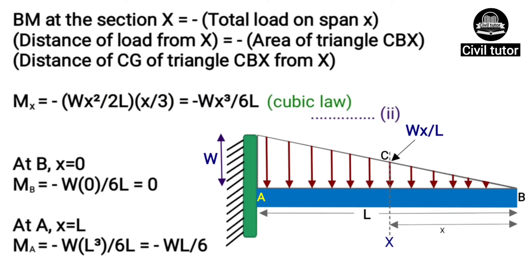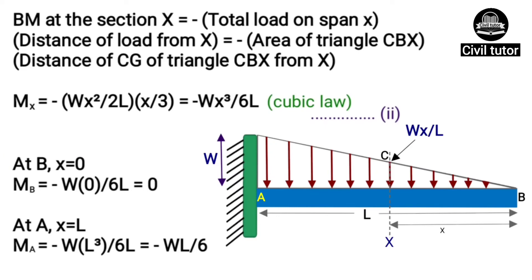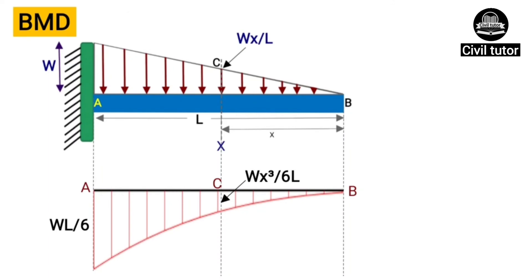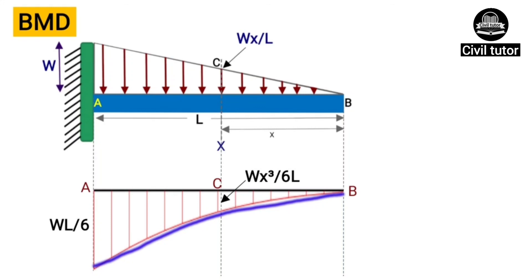At point B, x = 0, so substituting into equation two gives bending moment at B equal to 0. At point A, x = L, substituting into equation two gives bending moment at A equal to −WL²/6. To draw the BMD, we start from baseline AB, mark B as 0, draw −WL²/6 below the baseline at A, and join these points to get the resulting BMD.